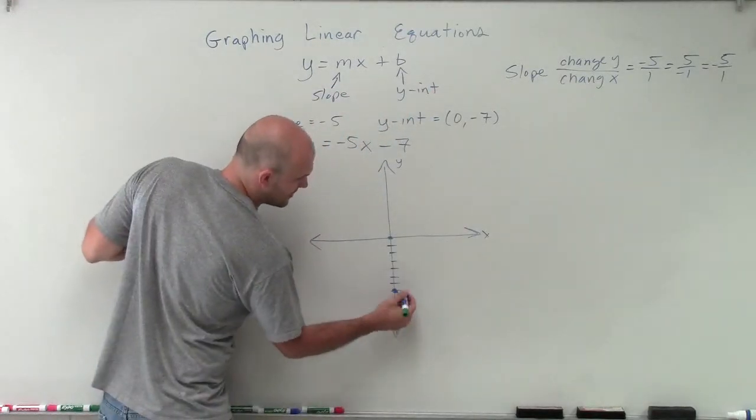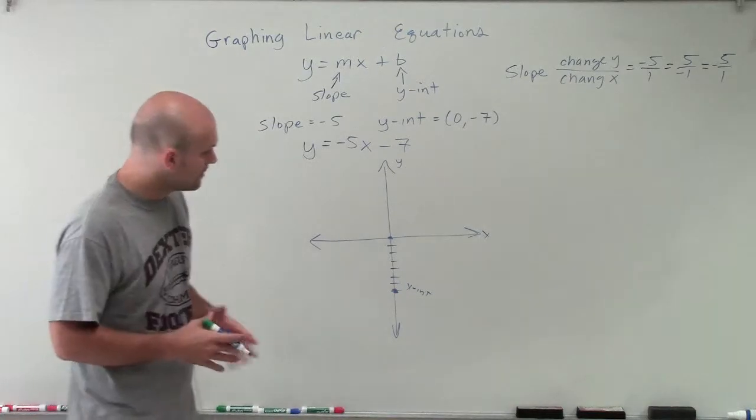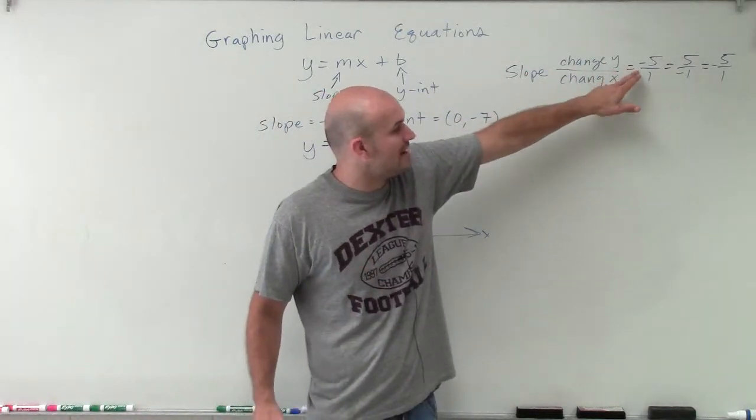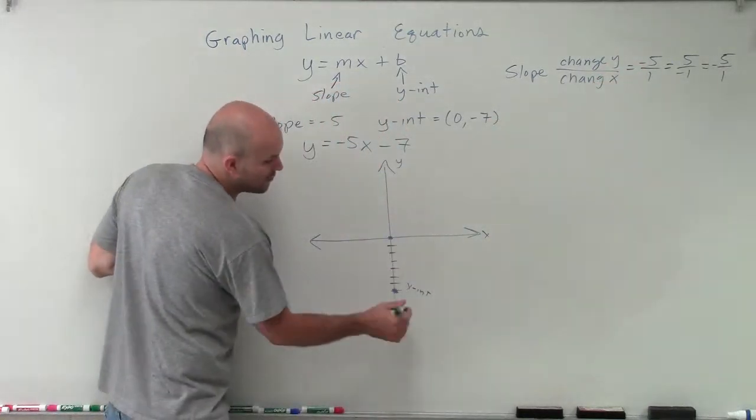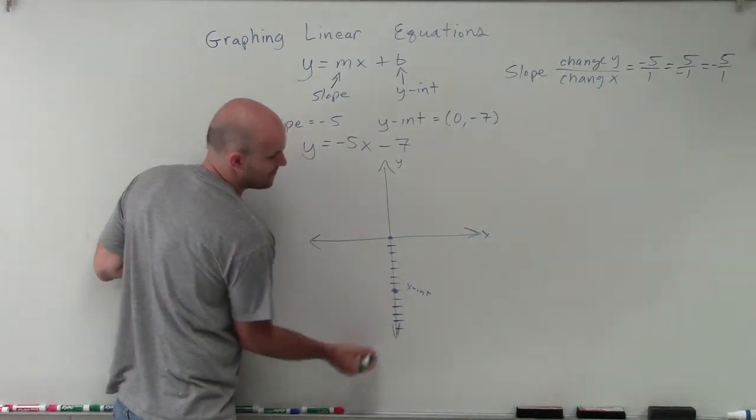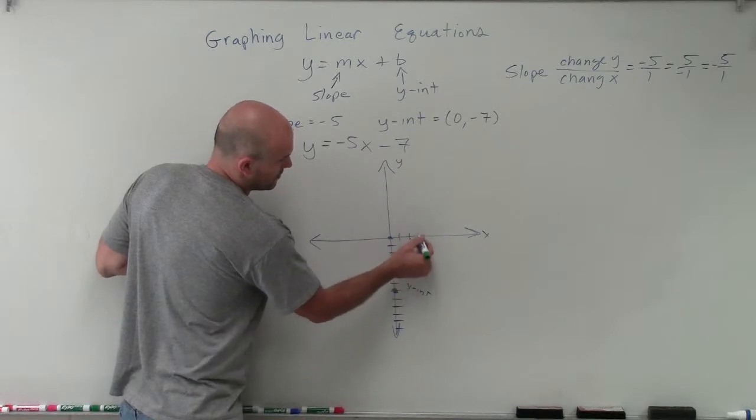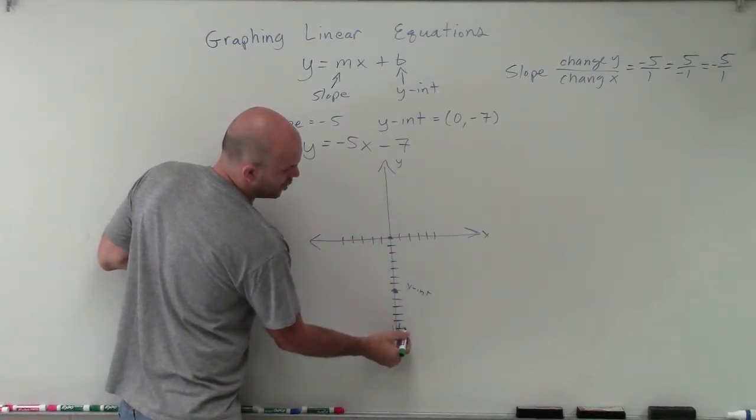So we know here's our y-intercept. So that's going to be our starting point. Now, I could go down negative 5. So if I rewrite my slope, or if I have my slope as change of y is negative 5, that means I need to go down 5 more units. So 1, 2, 3, 4, 5. So I could go down 5 more units over 1. So down 5 units over 1.